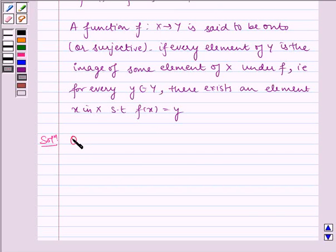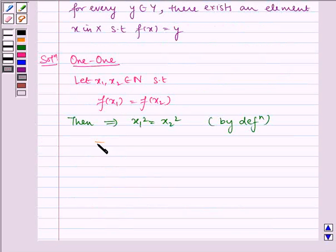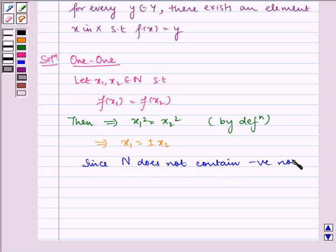Let us check for one-one. Let x₁, x₂ belongs to N such that f(x₁) = f(x₂). Then it implies x₁² = x₂² by definition. Since N does not contain negative numbers, so x₁ = -x₂ is not possible. Therefore, x₁ = x₂.